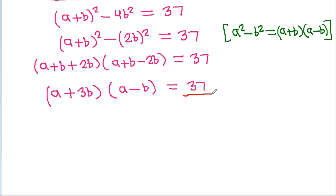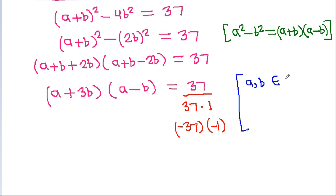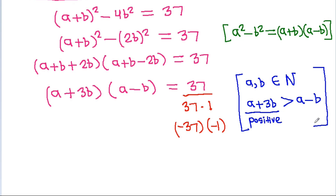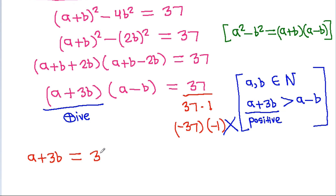And 37 can be written as 37 times 1 or minus 37 times minus 1. Note that a and b are natural numbers, so a plus 3b will be greater than a minus b, and a plus 3b will be positive. So both factors cannot be negative. Therefore, a plus 3b equals 37 and a minus b equals 1.